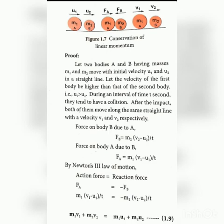Law of conservation of momentum states that if no external force is acting on a system, then the total momentum will remain constant. That is, in the absence of external force, the total momentum before collision is equal to the total momentum after collision. To prove this, consider two bodies A and B having different masses M1 and M2, with initial velocities U1 and U2. Since U1 is greater than U2, both will collide with each other.